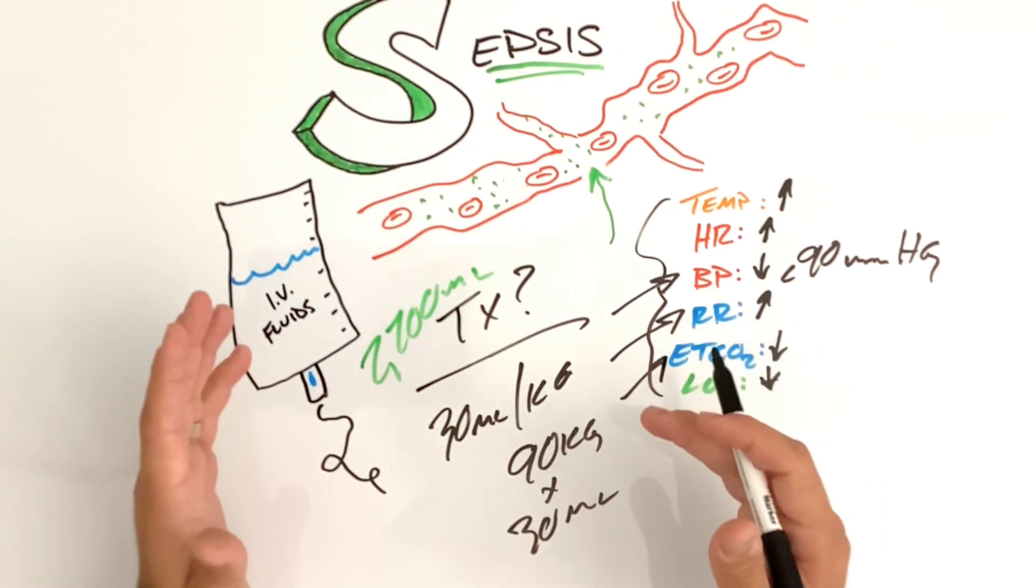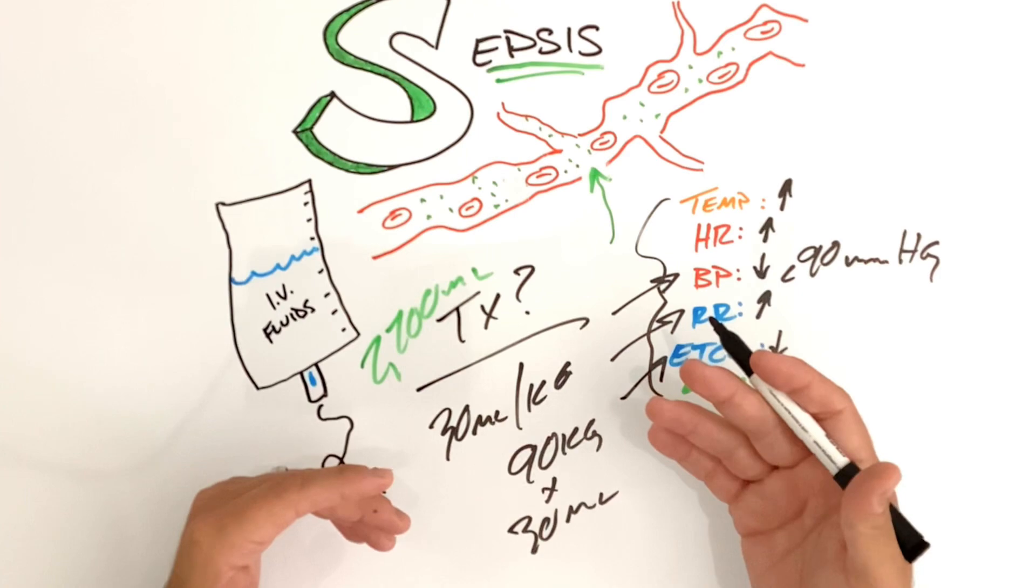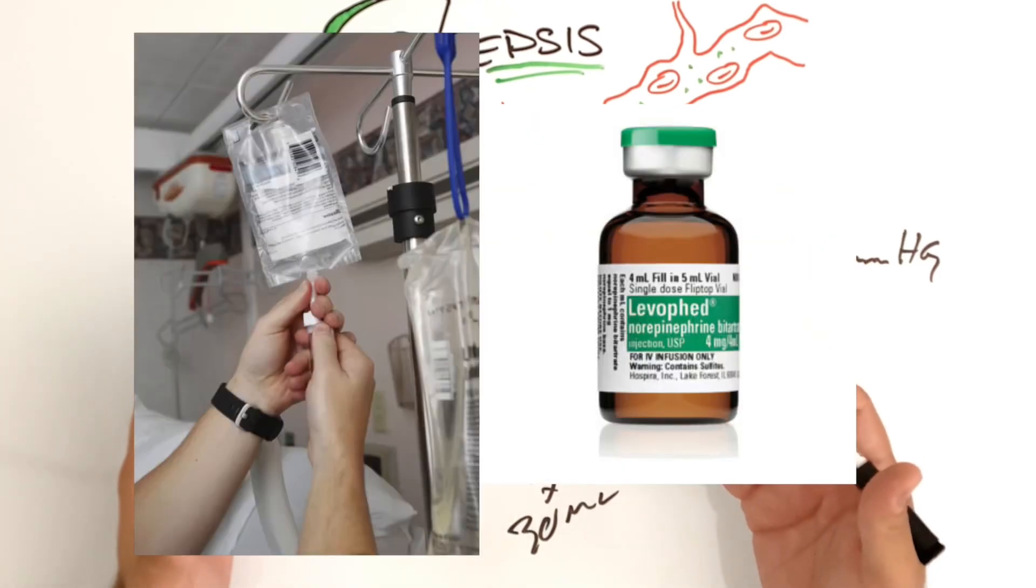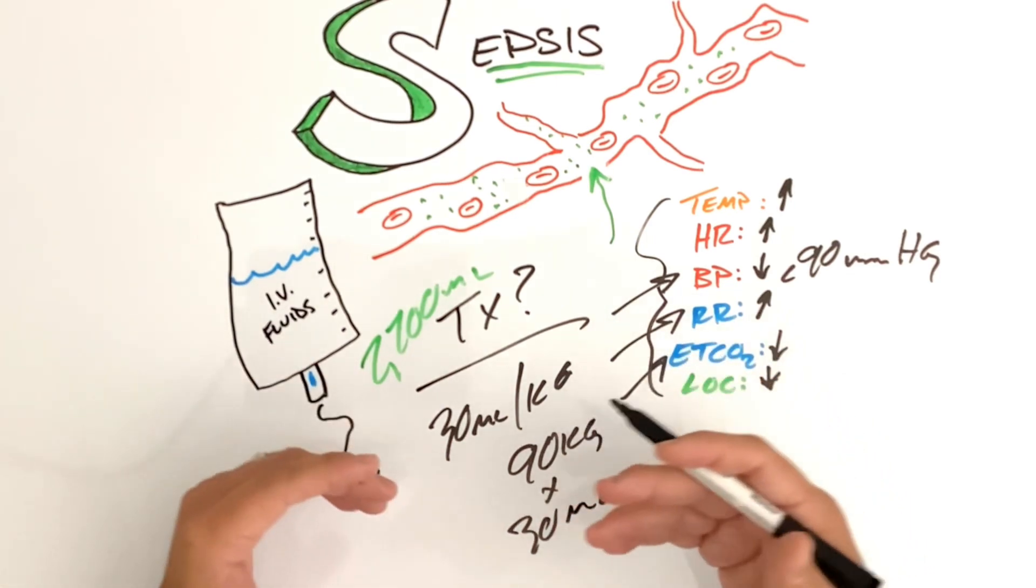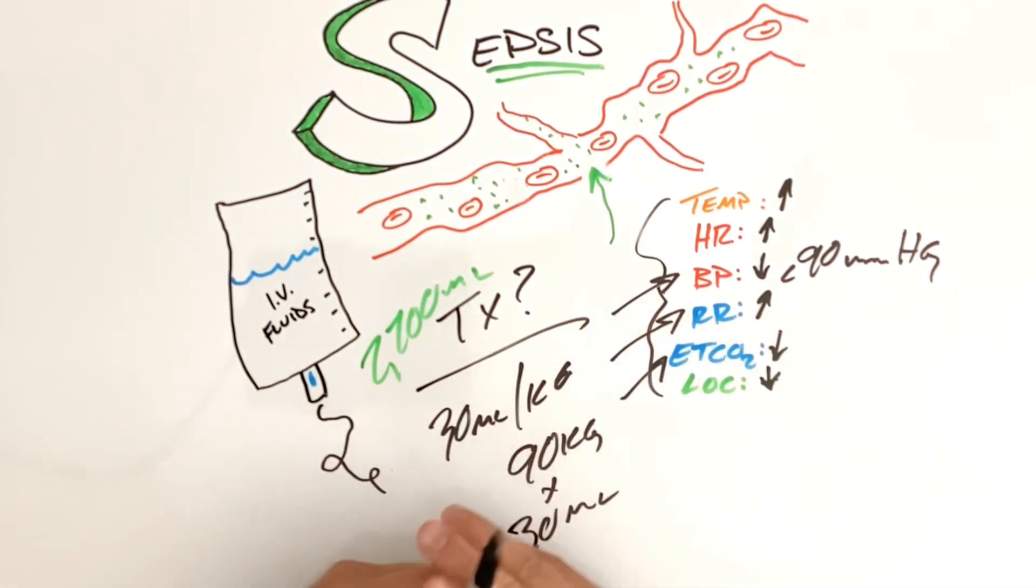Another thing to consider is your protocol may call for norepi, a norepi drip to maintain vasoconstriction and increase your patient's blood pressure if they're unresponsive to fluids. We need to get these patients to a hospital.